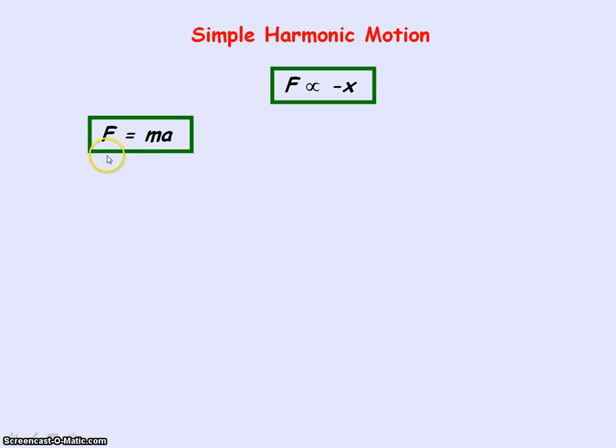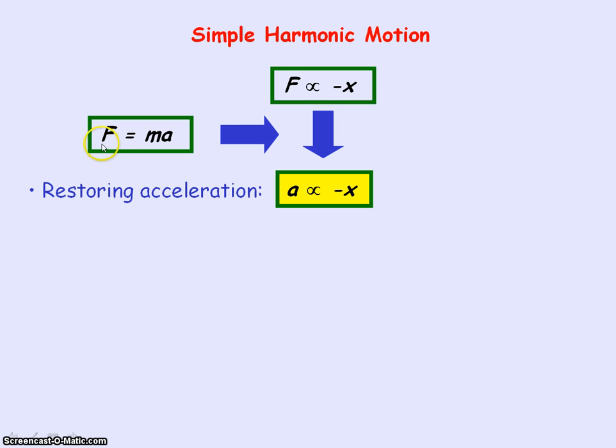So we know F equals MA. So if force is directly proportional to negative displacement and force is directly proportional to acceleration, then acceleration must be proportional to negative displacement. So we define simple harmonic motion as an oscillation where the acceleration is directly proportional to negative displacement.